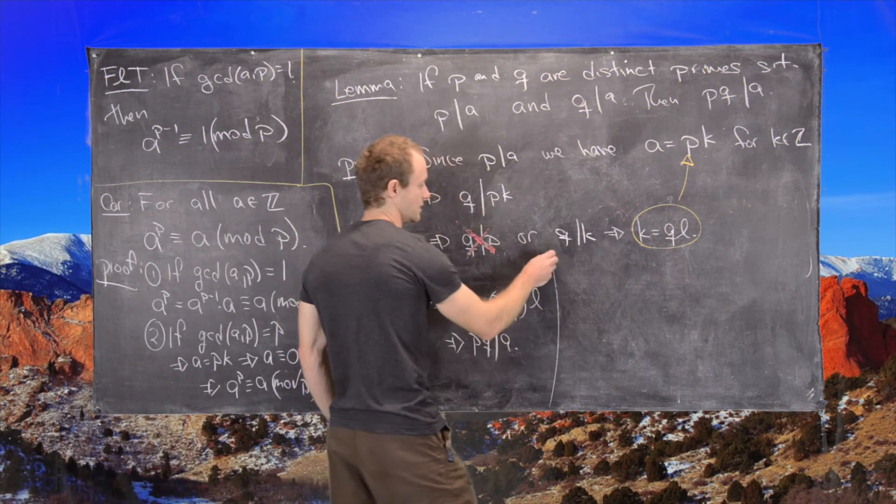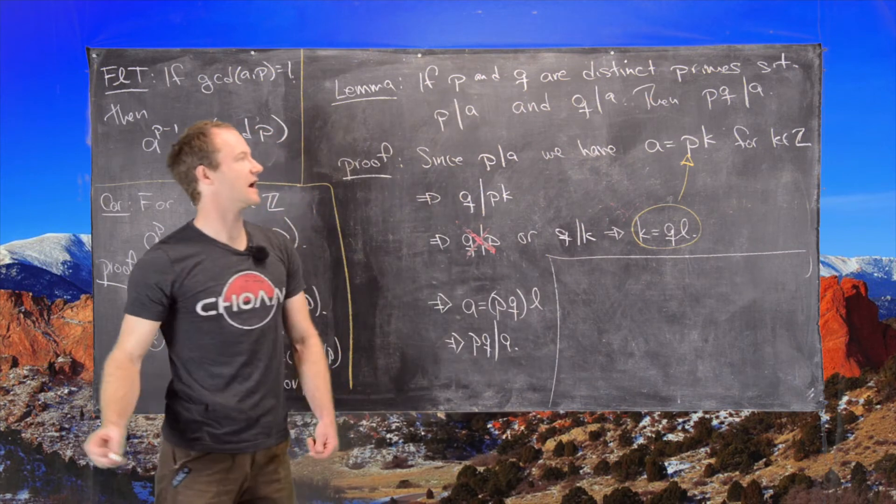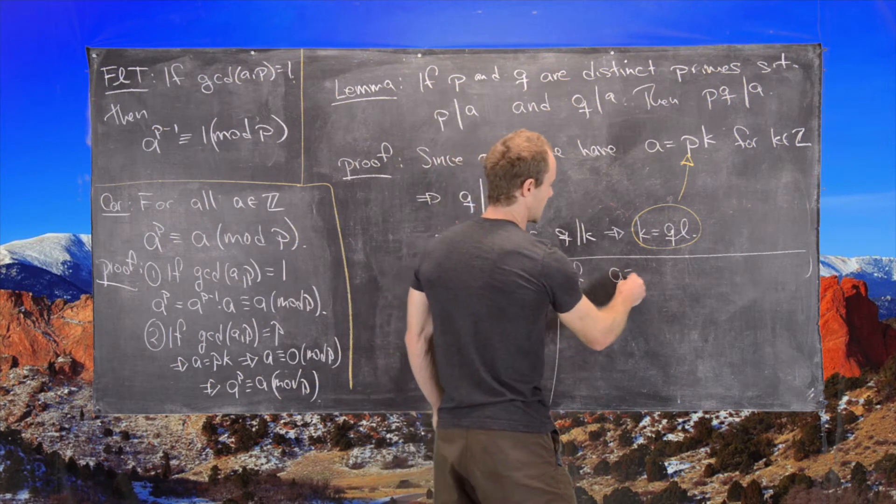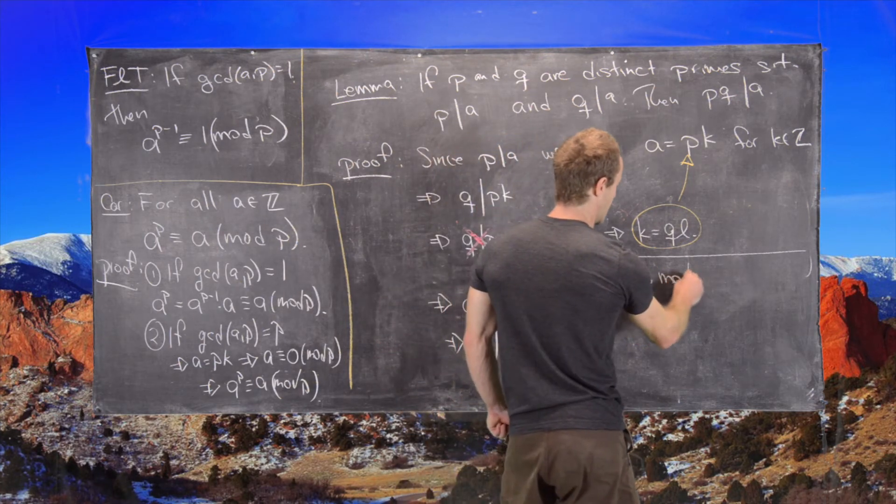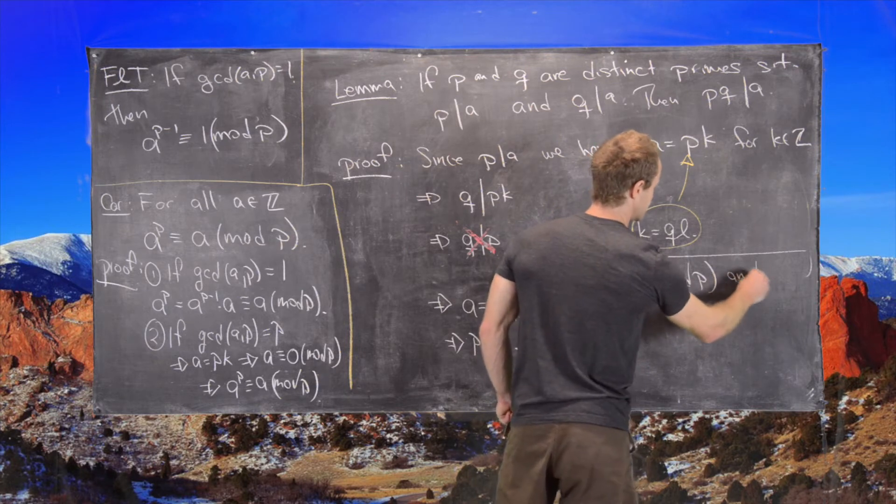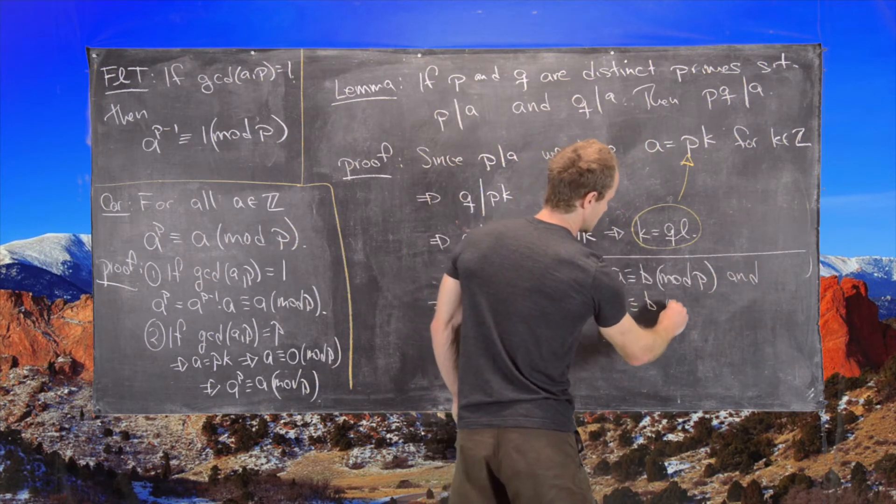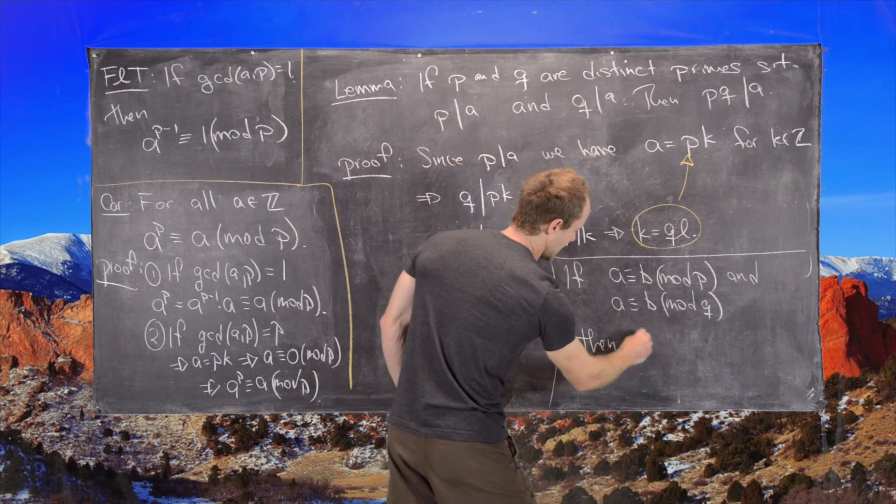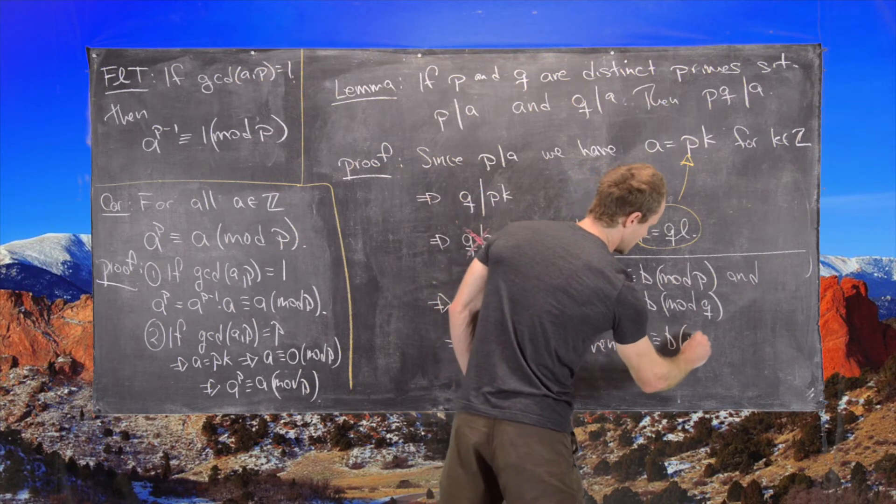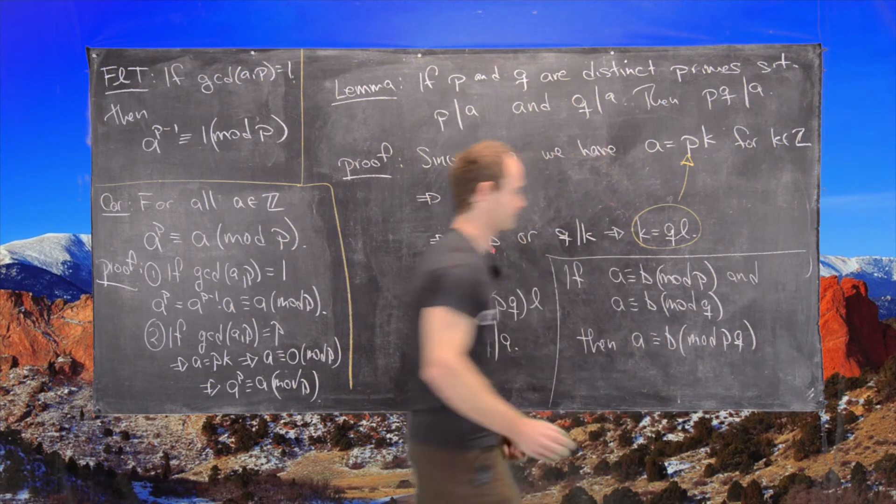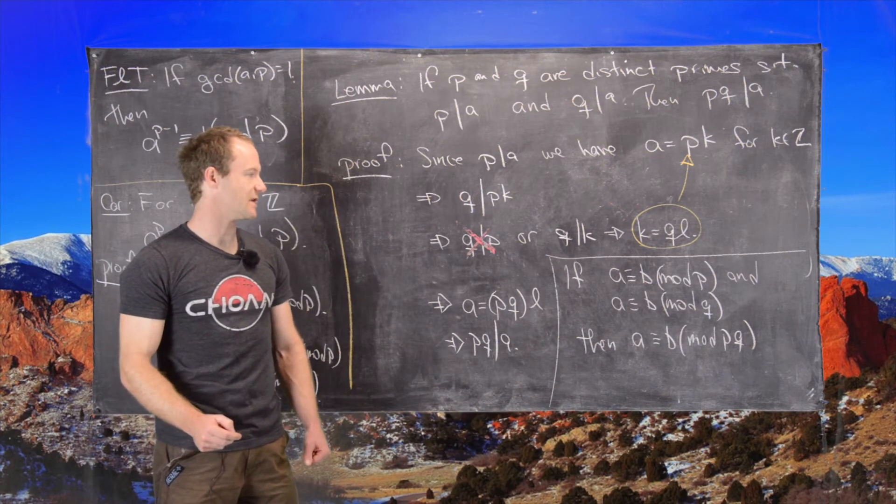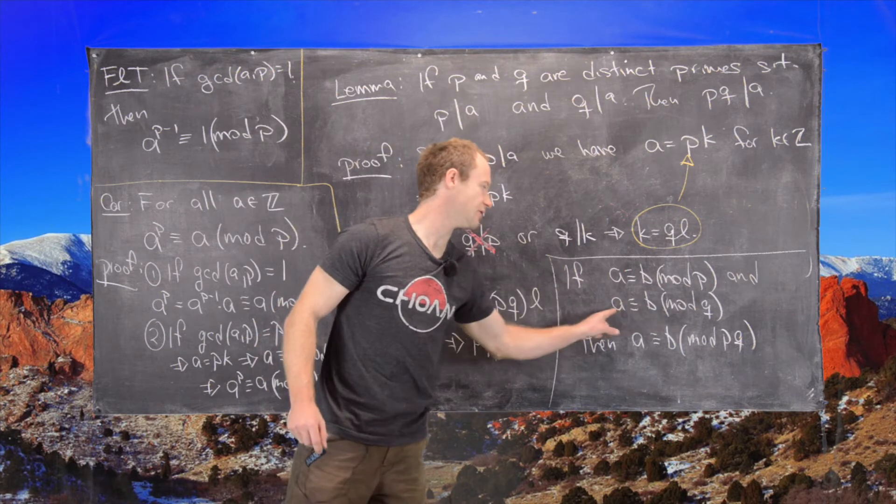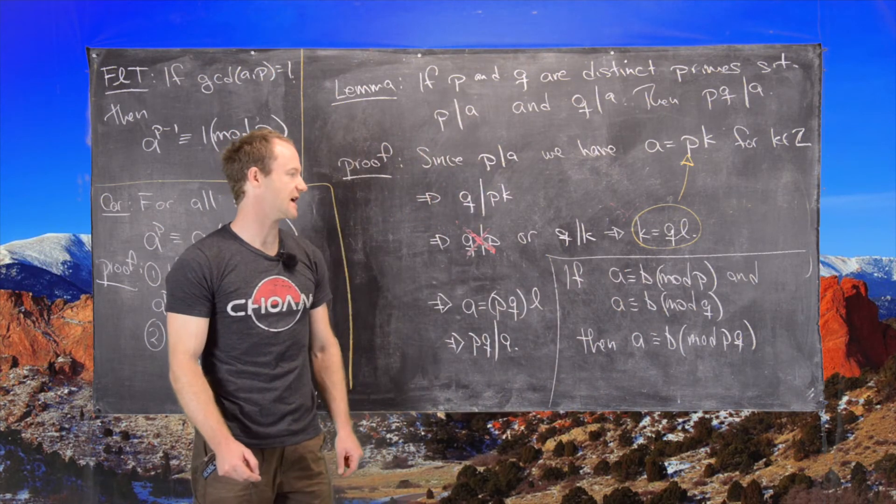So now let's notice that this is kind of equivalent to the following. If A is congruent to B mod P and A is congruent to B mod Q, then A is congruent to B mod PQ. So it's exactly equal to this statement. It's just in this case, we're saying P divides A minus B and Q divides A minus B. And that means PQ divides A minus B.